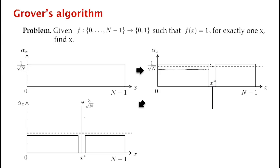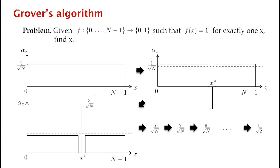Since this works so well, we just keep doing these steps over and over again. Each time we do phase inversion followed by inversion about the mean, we increase the amplitude of x* by about 2 over square root n. So it goes to 5 over square root n, 7 over square root n, 9 over square root n, and so on. In roughly square root n steps, we'll have increased this amplitude to about 1 over square root 2. At that point, if we measure, the chance that we see x* — the marked element — is roughly 1/2. In roughly square root n steps, we've found the marked element.